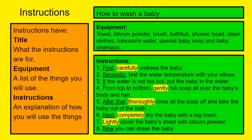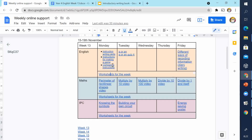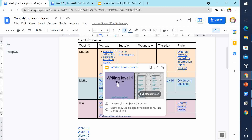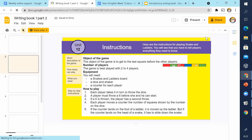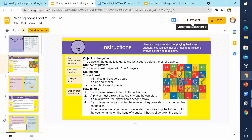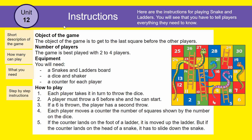Now let's look at instructions for making a game. You can choose what you write instructions for. Here is an example for Snakes and Ladders. First you need the title of the game. Then 'Object of the Game' — a subtitle explaining how the player will win: 'The object of the game is to get to the last square before the other players.' This version only goes up to square 30, though most versions go to 100.